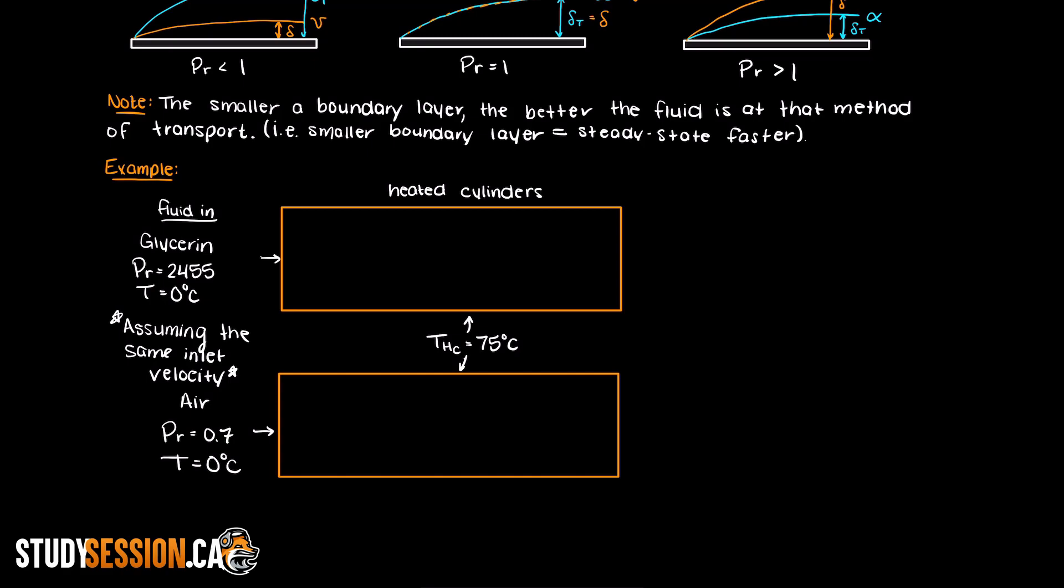Well, let's look at our glycerin example first. This is a high Prandtl number which tells us that the diffusivity of the momentum is going to dominate the diffusivity of the thermal transfer. Therefore, we are going to see the thermal boundary layer develop much slower than the momentum boundary layer.